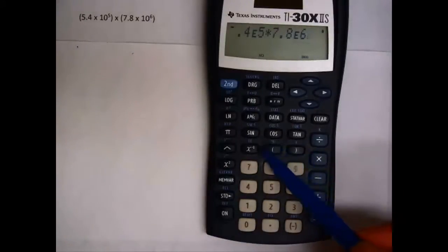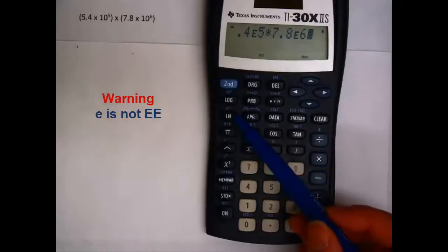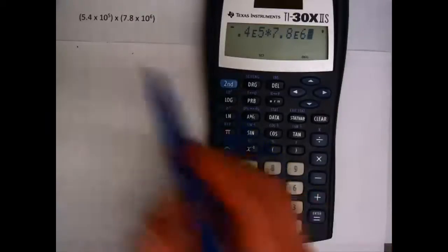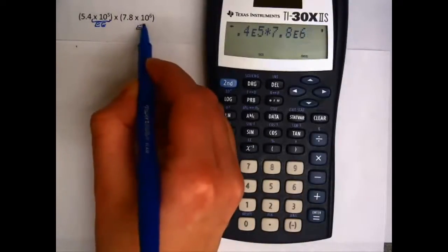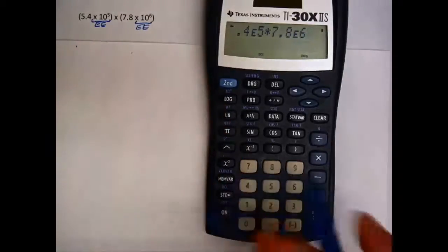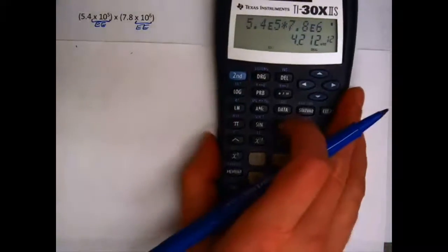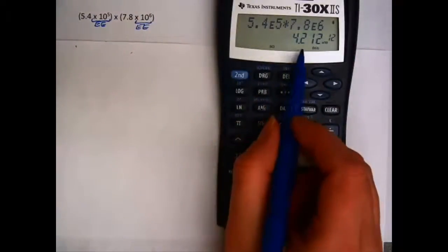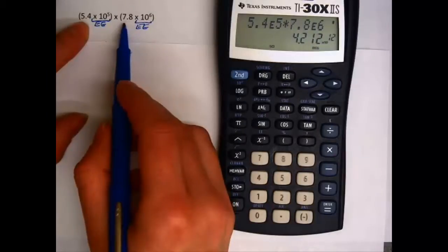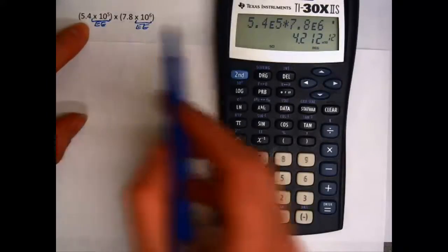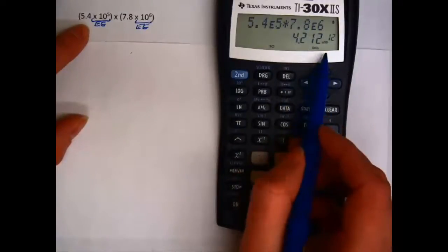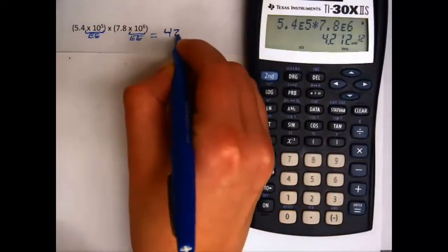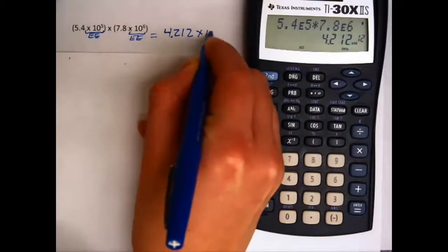Now there's a big difference between this EE button and this E to the X button. They're definitely not the same thing. So again, EE is short for times 10 to the 5th. And on your paper homework, you want to be writing times 10 to the 6th. You don't want to be writing E or EE. Okay, so that's very handy for this problem, because if I would have done this by hand, 5.4 and 7.8 would have given me a value of 42, and I would have had to adjust my scientific notation. But the calculator actually gives me the value in scientific notation, 4.212 times 10 to the 12th.